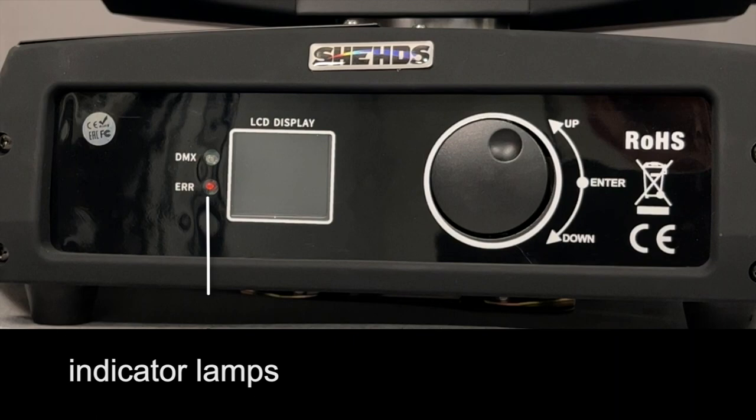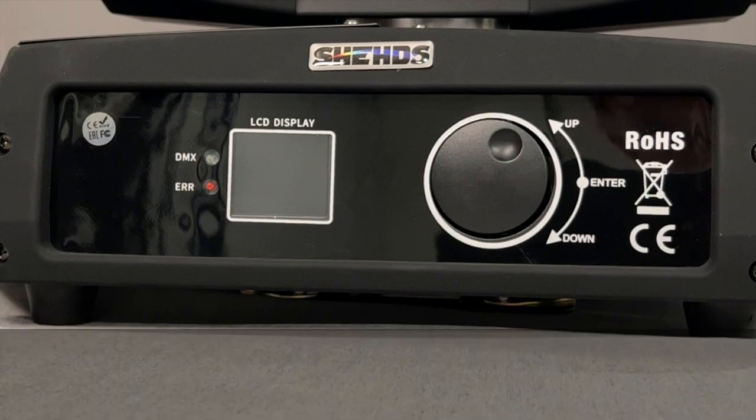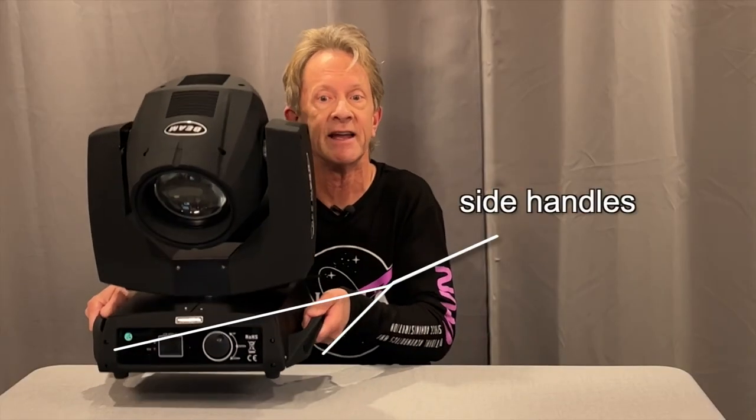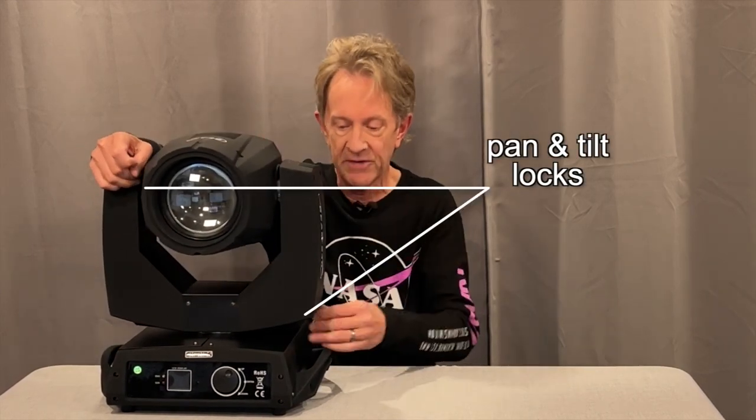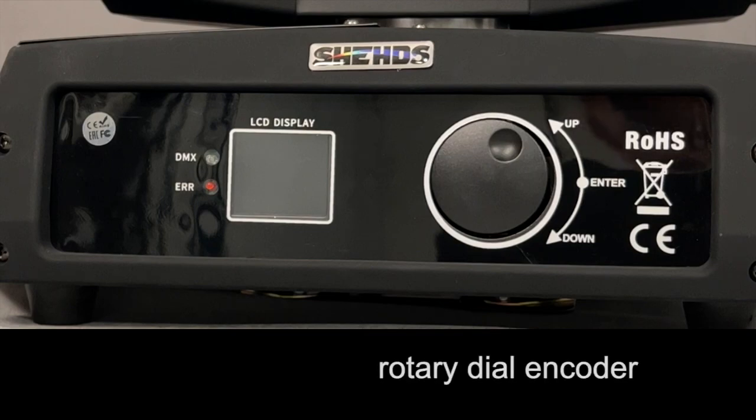Looking at the front, there's DMX and error indicator lamps, and on the sides, these large carrying handles, which you're gonna need to move this guy around. A few pro features that up the game are these locks, which click in place to secure the head when you're transporting it. Just make sure that you have them unlocked when you power it up. There's also this cool encoder rotary dial on the front that makes accessing the menu controls faster and easier.